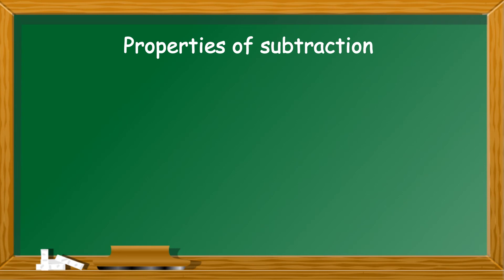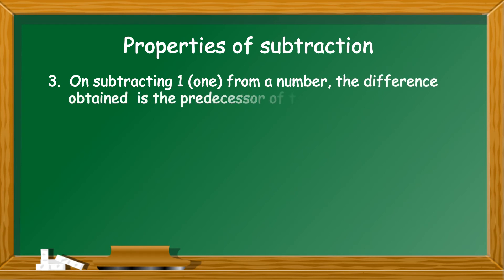Property number 3. On subtracting 1 from a number, the difference obtained is the predecessor of that number. For example,